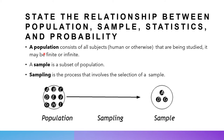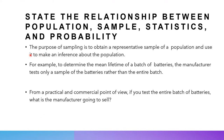Rather than studying a population, we have this concept known as a sample. A sample is really just a subset of a population. A population has many different subjects or entities. Sampling is then the process of selection for a sample — a sample is a proper subset of a population. The purpose of sampling is to obtain a representative sample of a population in order to make an inference about the population.